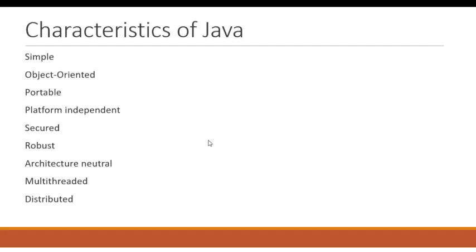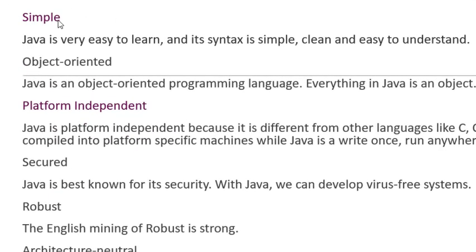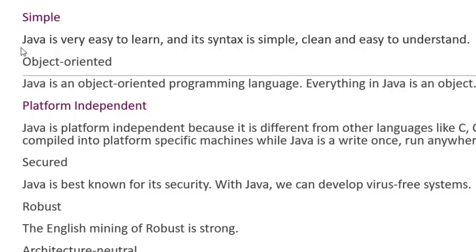We will see these one by one in detail. First, Java is a simple language. Why is Java simple? Because its syntax and semantics are very simple. Java follows standard syntax and semantics of programming. It is very easy, clean, and easily understood by everyone. The syntax of Java is more or less similar to C++, and most of the concepts are derived from C++.